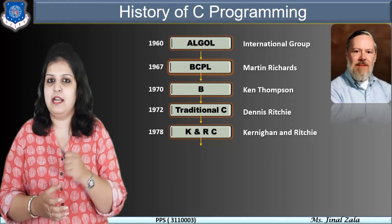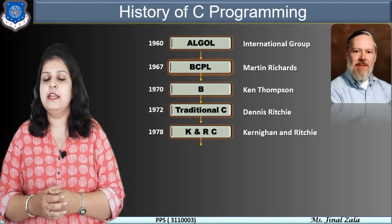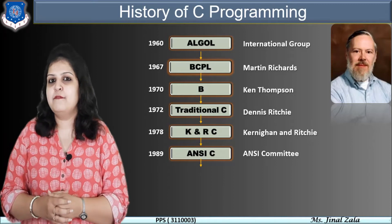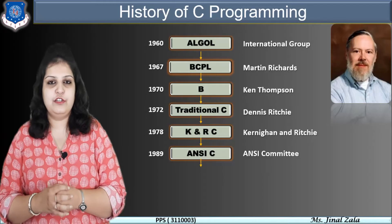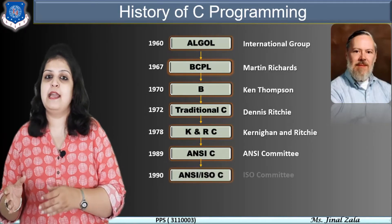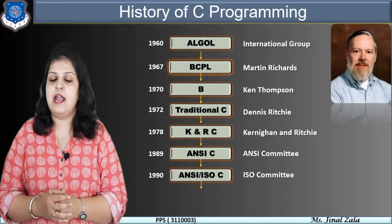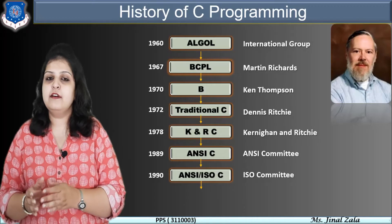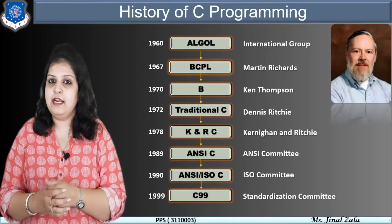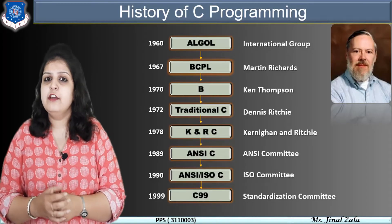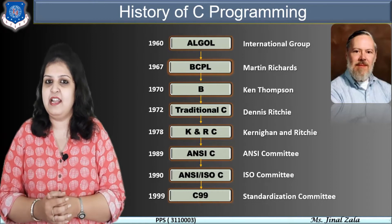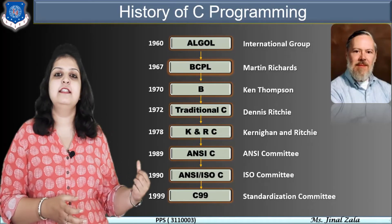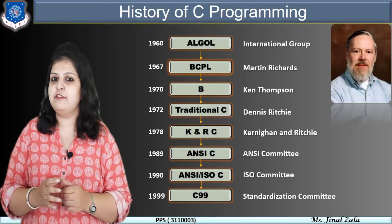K means Kernighan and R means Ritchie. Then in 1989, the ANSI committee defined some standards for C language. The full form of ANSI is American National Standard Institute. These standards were approved by the ISO committee in 1990, and that is called ANSI ISO C — ISO meaning International Standard Organization. Further improvements occurred and in 1999, the standardization committee decided to add some features of C++ and Java into C programming. After adding these features, the final language created is called C99. This is all about the history of C programming.